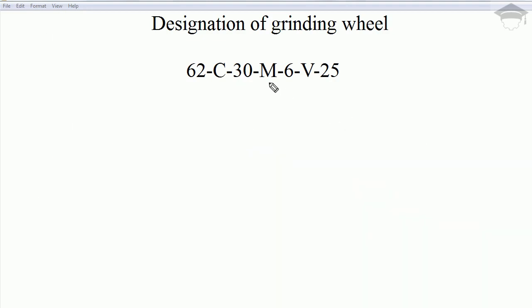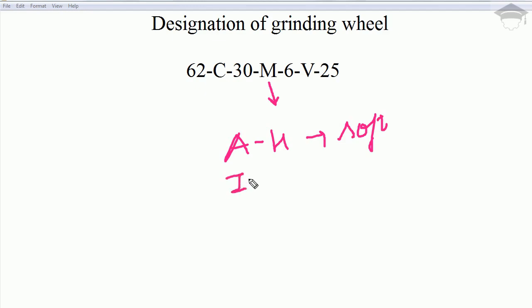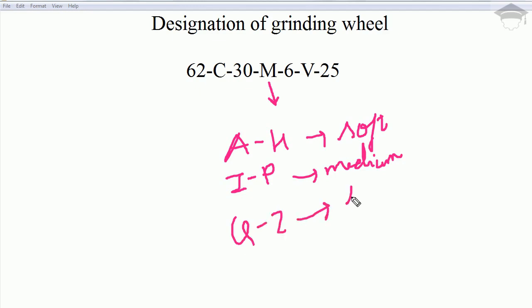The next term 'M' denotes hardness. From A to H the grinding wheel is soft; from I to P it is medium; and from Q to Z it is hard. 'M' lies between I and P, so it is a medium grinding wheel. If it were 'D' it would be soft, and if it were 'U' it would be hard.